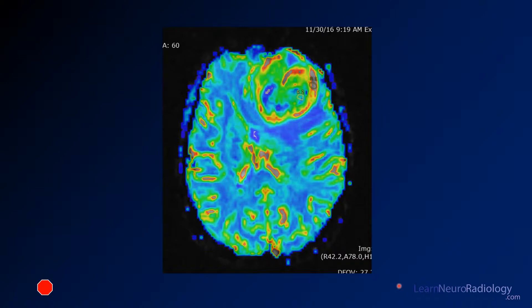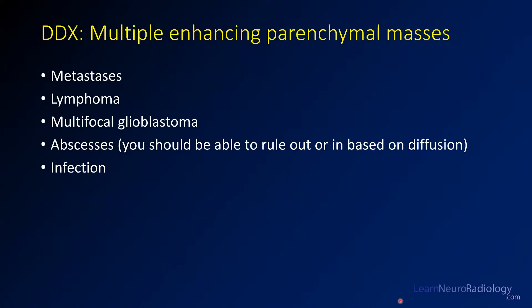So think about what your leading diagnosis would be. In this case we have multiple enhancing peritumoral masses. Anytime you see multiple enhancing masses you want to have a differential in mind. Your top three in this case are going to be metastases, lymphoma, and glioblastoma.